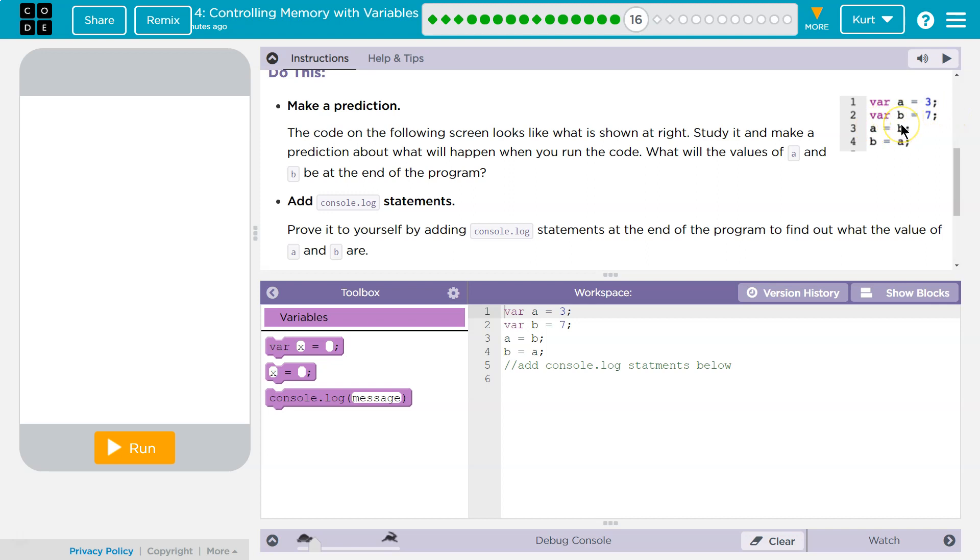Well, a is now equal to b. That does not mean a is equal to the letter b. The computer sees b and says, what the heck is b? Boom, oh here it is. Oh, b is 7. So a is equal to 7. Got it. A is 7 now, okay?